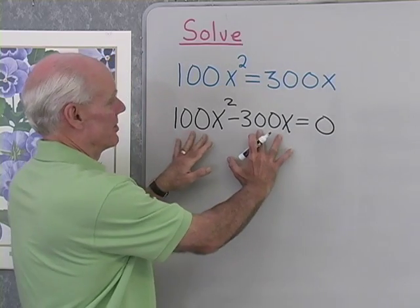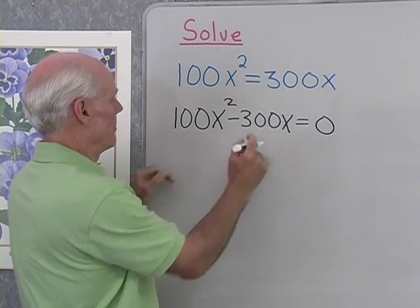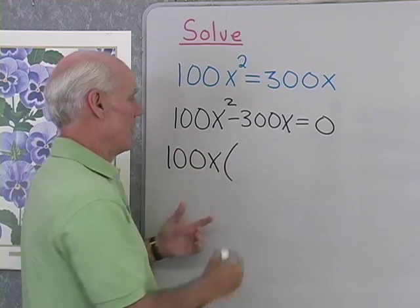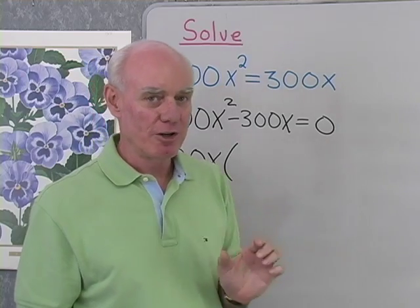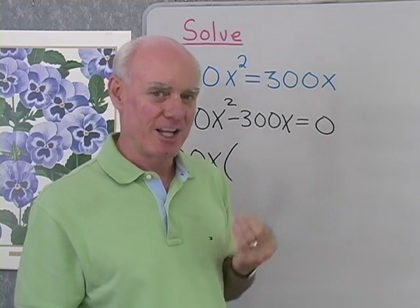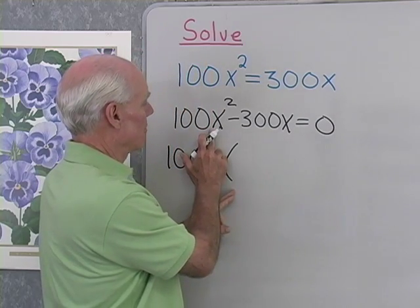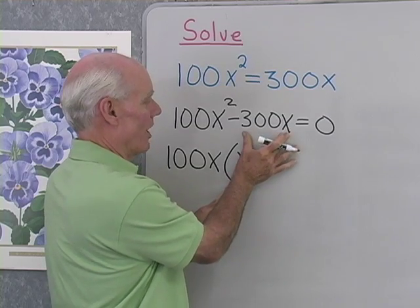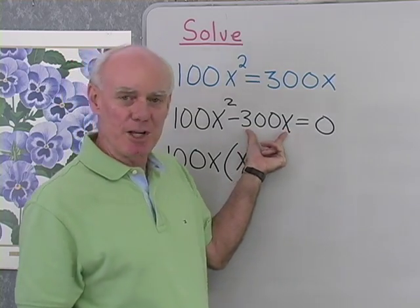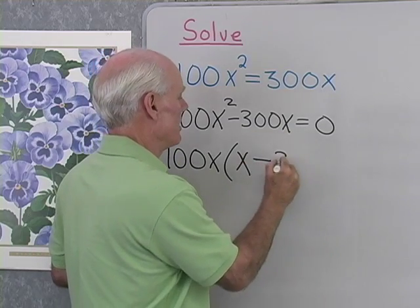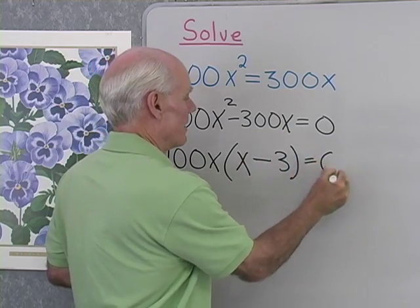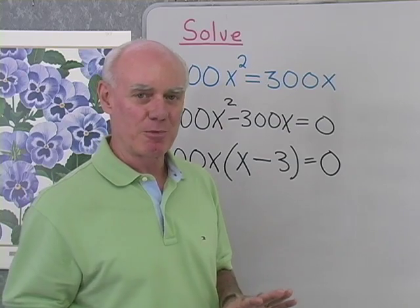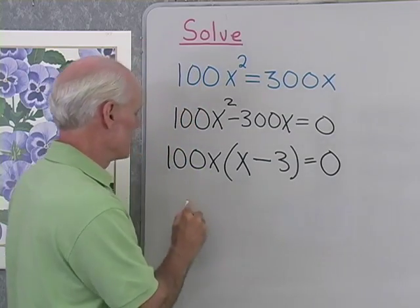I need this equation in standard form with 0 on one side so I can use the zero factor property. Now let's factor. I notice 100x is common to both terms. When we do factoring, we always look for the greatest common factor first. When I factor 100x out of 100x squared, what's left is x. When I factor 100x from 300x, what's left is 3. So my left side in factored form is 100x times the quantity x minus 3.